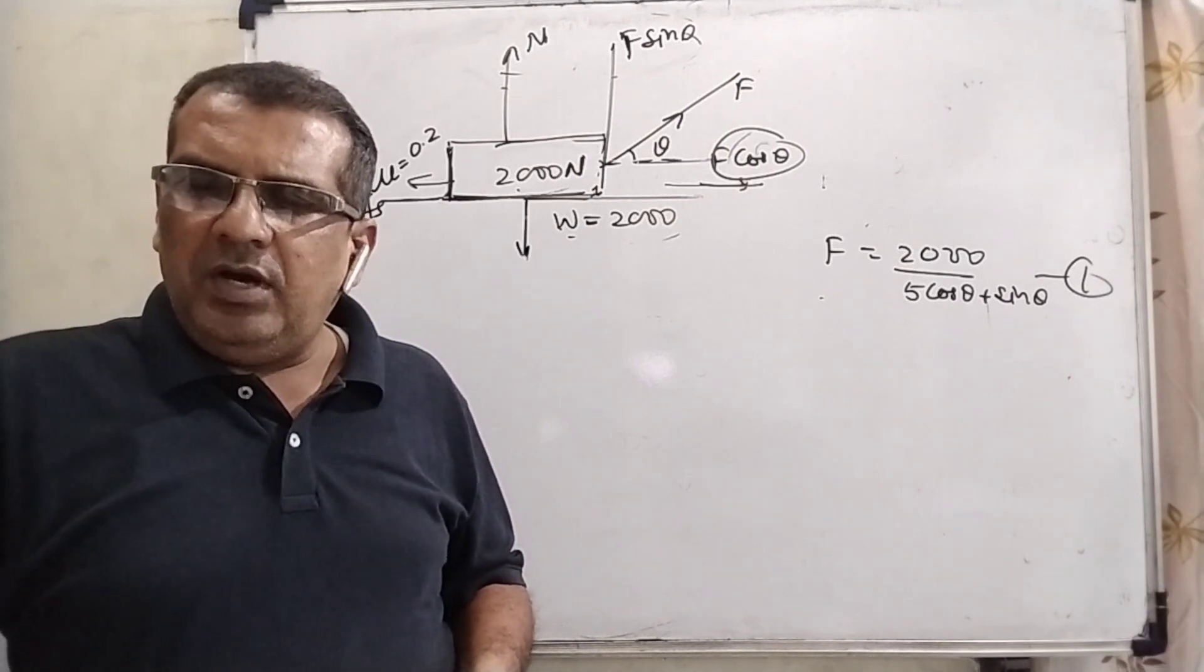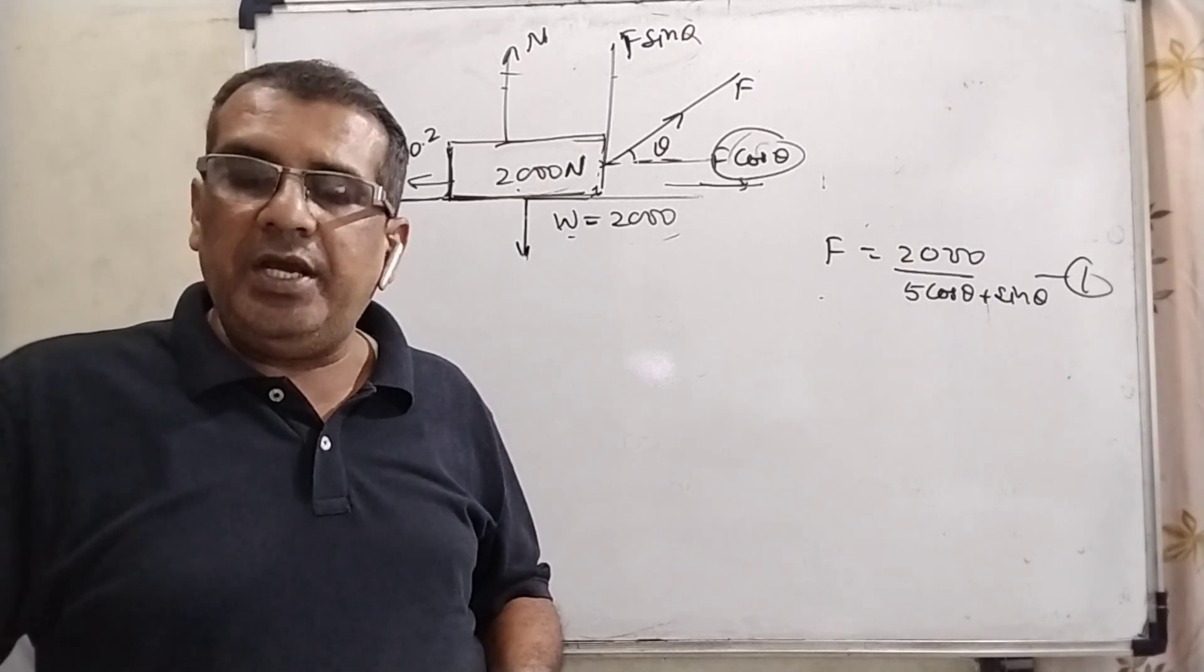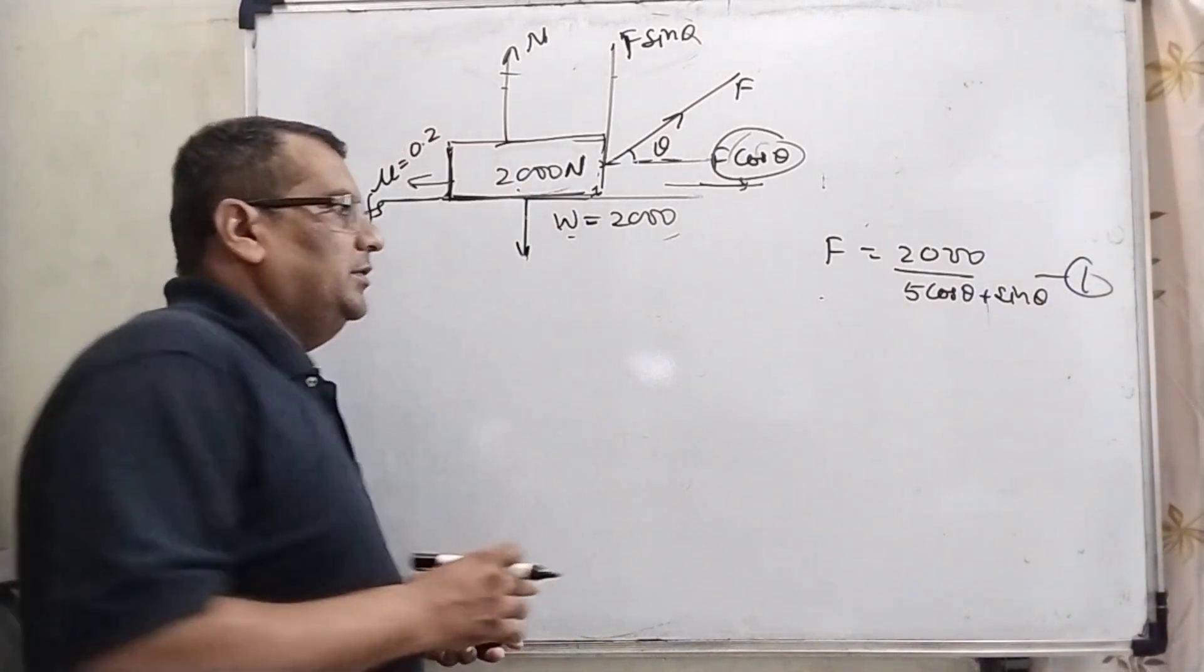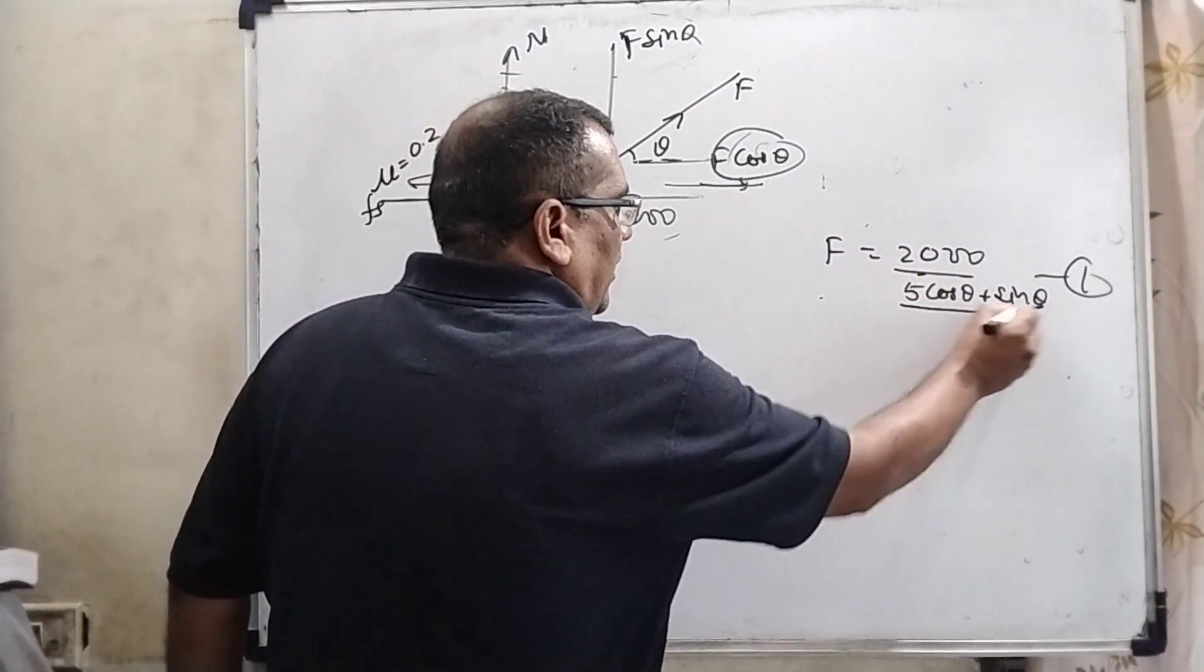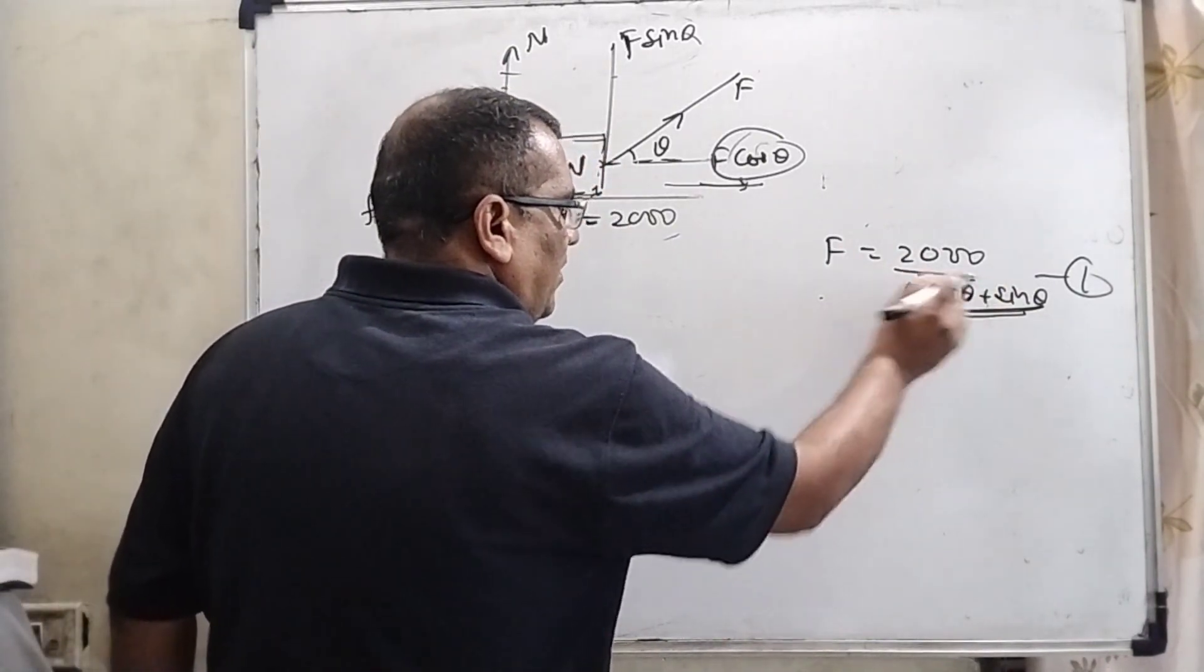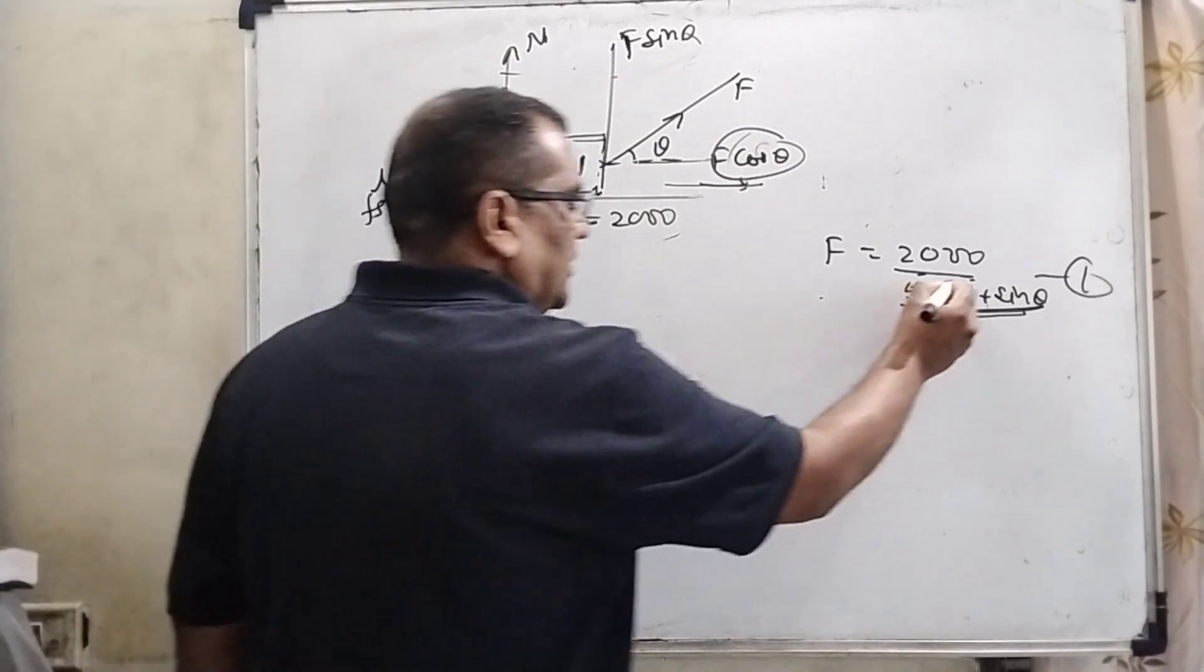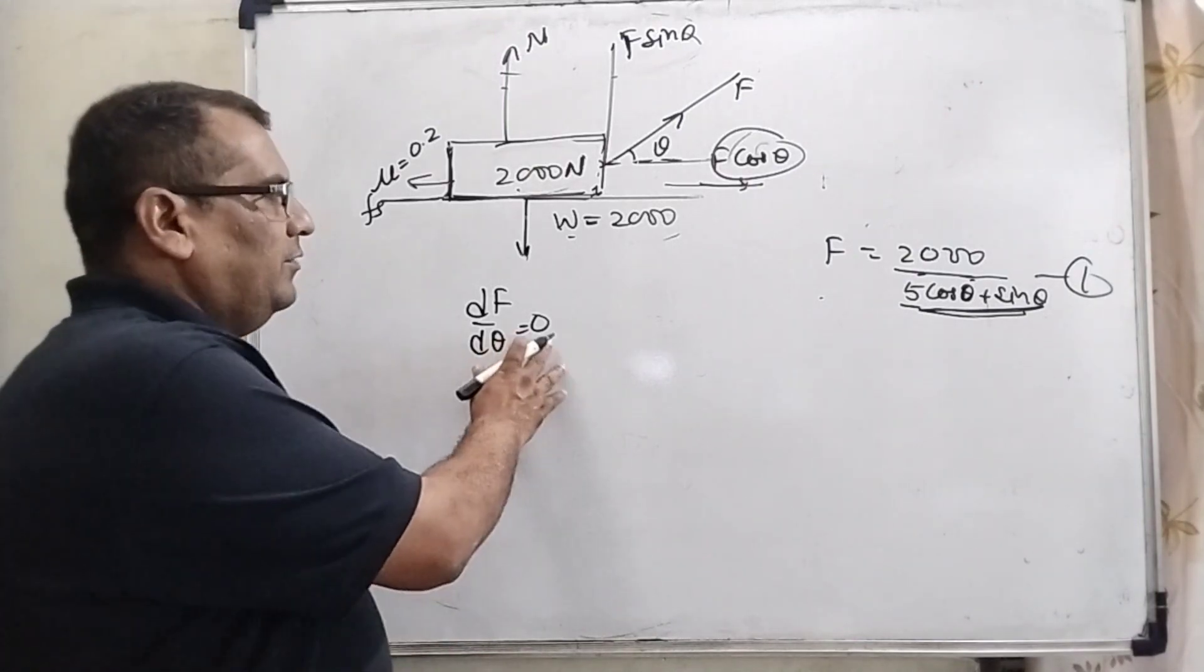Now second thing we have to find. Find the work done when the person has chosen a value of theta which ensures him the minimum magnitude of the force. What does it mean minimum work done? That is minimum force. It means this value of denominator is maximum. So this denominator is in form of theta. So let us use the minima concept. We have using dF by d theta equal to zero, because this value is in the form of theta.